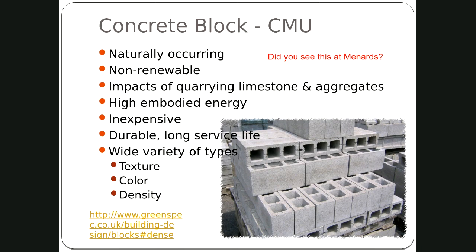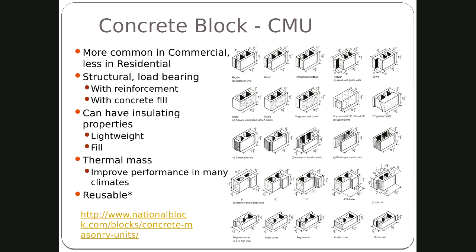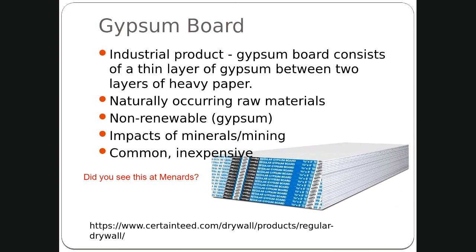If brick can't be reused, it can be down cycled into aggregate. Concrete block — CMU, concrete masonry unit — is made with concrete in forms using limestone and aggregates. It has high embodied energy but is inexpensive and long-lived. You can get it with a variety of textures and finishes, including some with a nice exterior finish. These come in different sizes.